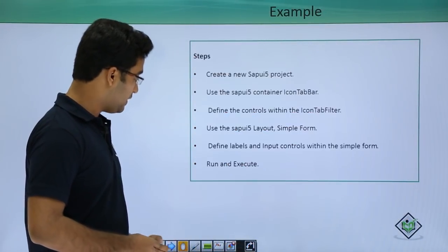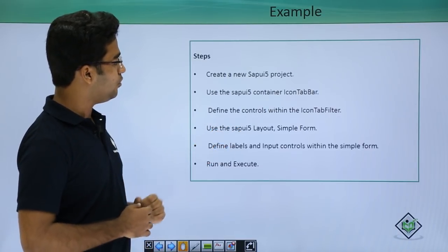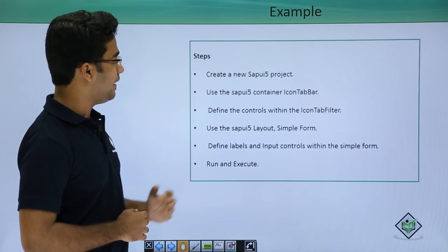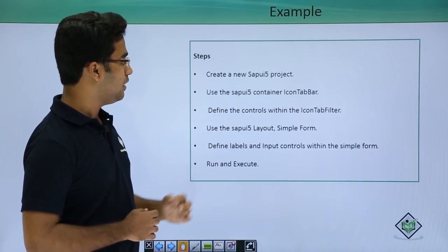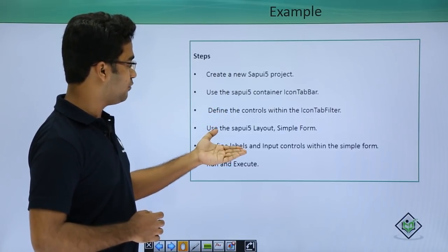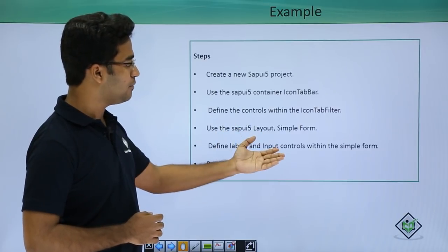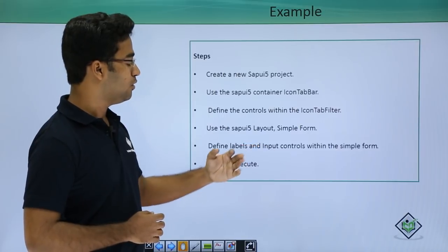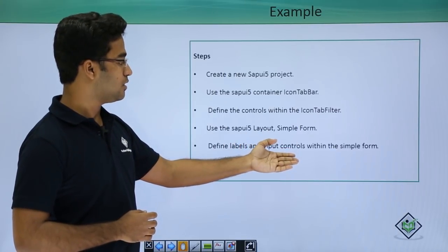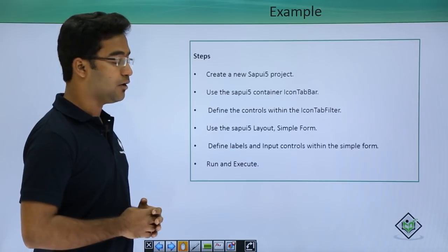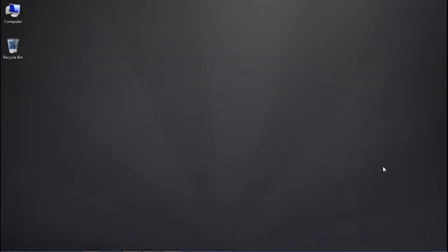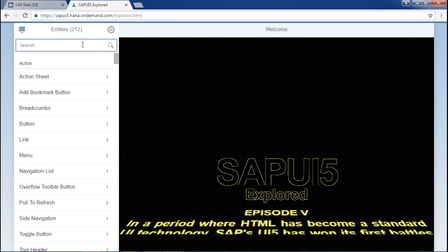Now let us move to the next slide. I have explained the example of simple containers and layout — I created a new SAPUI5 project and used the icon tab bar container with particular controls, and a simple form layout with labels and input controls. Now let us take a look at the practical demonstration in SAPUI5. I will open the SAP UI5 explore section and type in 'containers' — so these are all the containers that SAPUI5 offers.